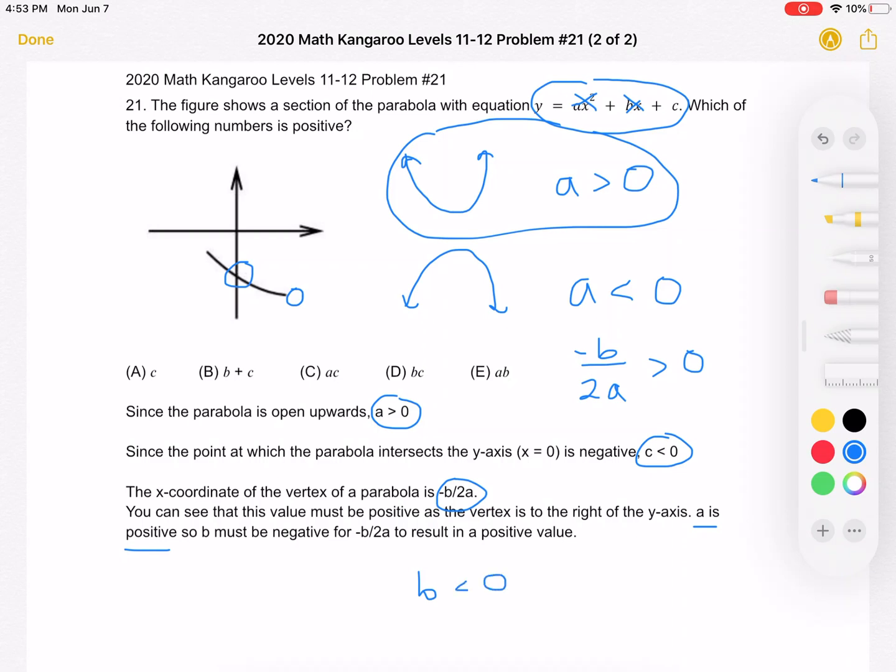So now we have everything we need to solve the problem. Let's look through the answer choices to see which number is positive. For choice a, we have c. Well, no, we determined that c is negative. For choice b, we have b plus c. No, we determined that both b and c are both negative numbers. So their sum is also negative.